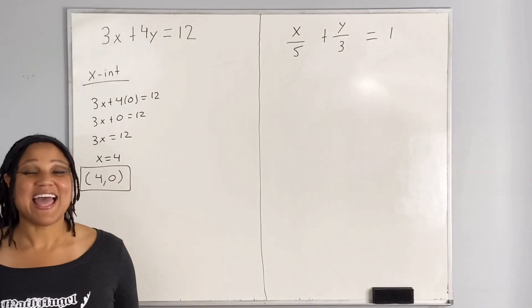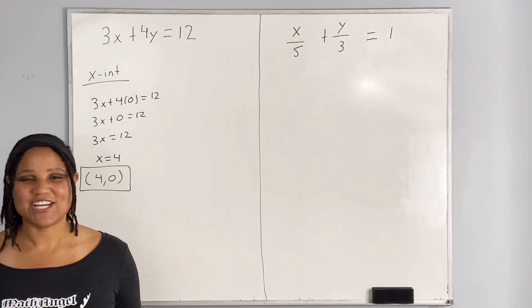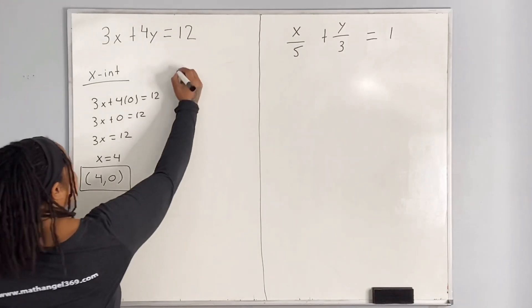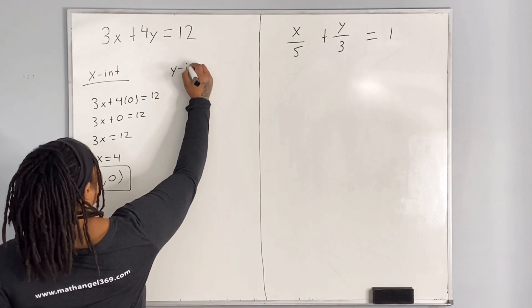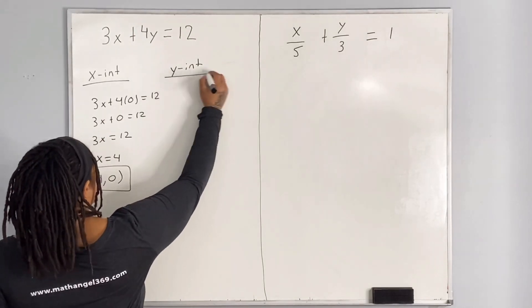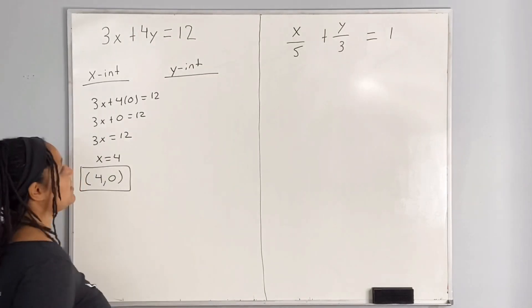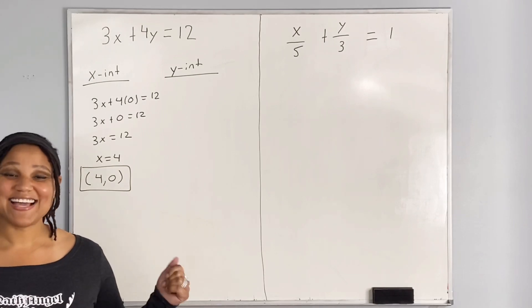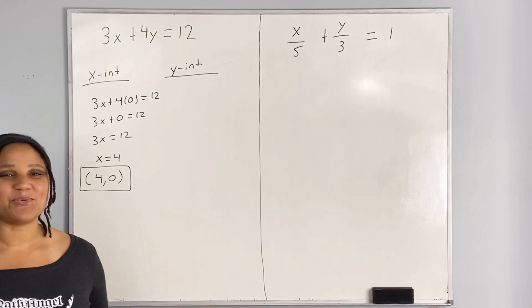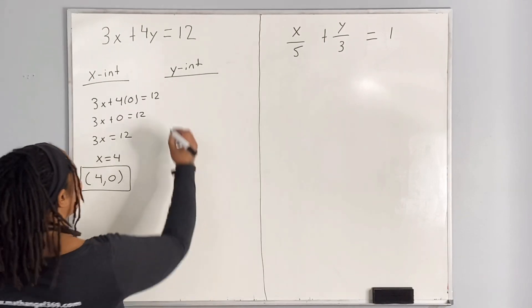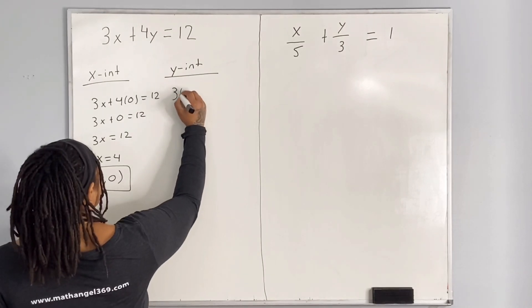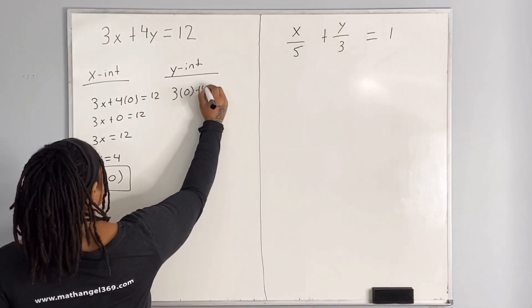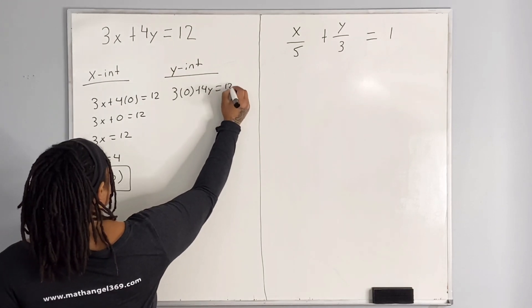And that is how you find the x-intercept. Now let's find the y-intercept. To find the y-intercept, we simply set x equal to 0 and solve for y. So I'm going to replace x with 0, so we have 3 times 0 plus 4y is equal to 12,